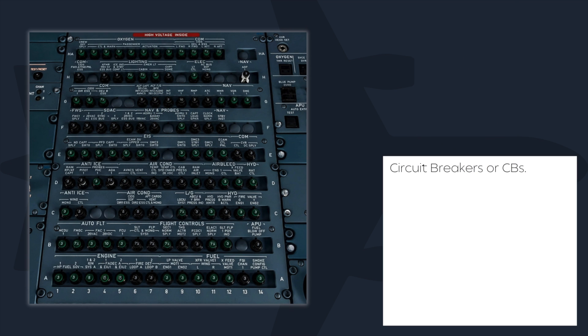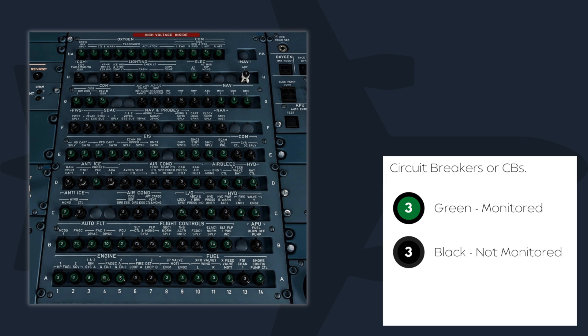The various aircraft electrical components are protected by two main types of circuit breakers, or CBs. The green or monitored CBs will trigger the ECAM warning 'CB tripped' if the CB is out for more than one minute. The black CBs are unmonitored. The red CBs are for the wing tip brakes, which can only be reset by maintenance on the ground.